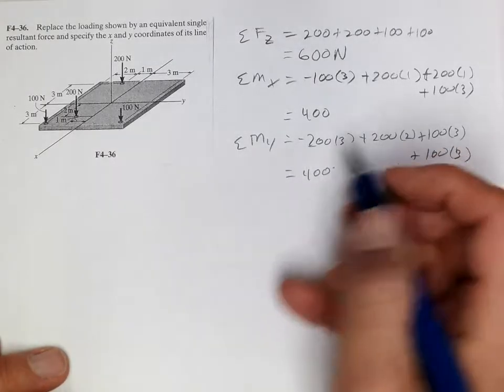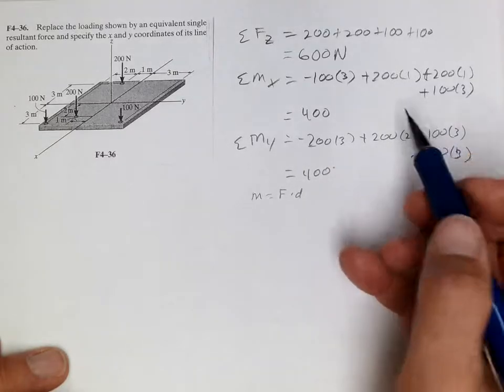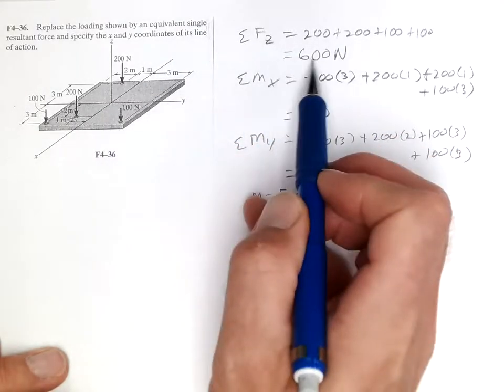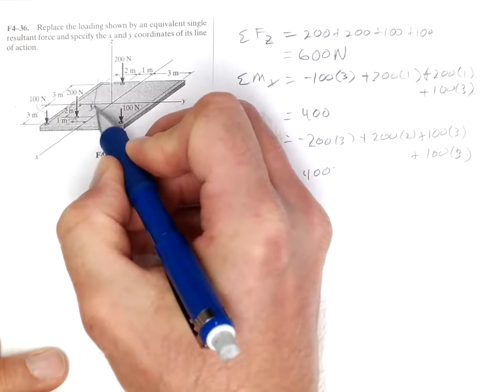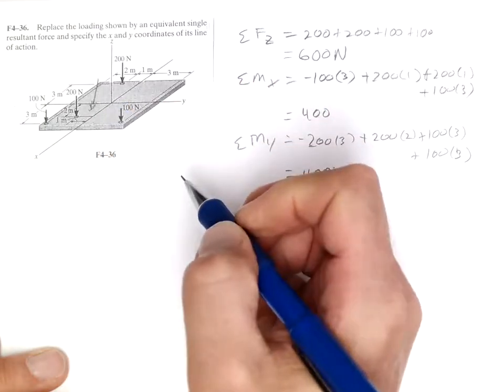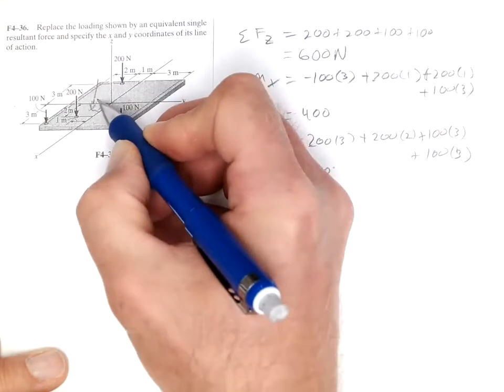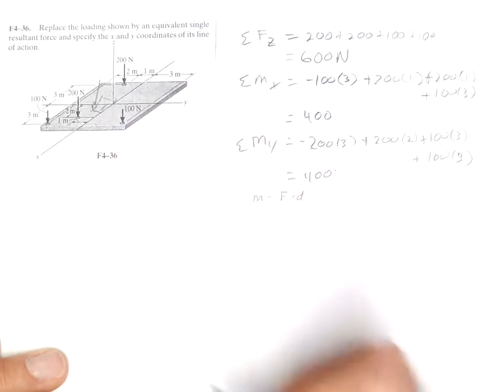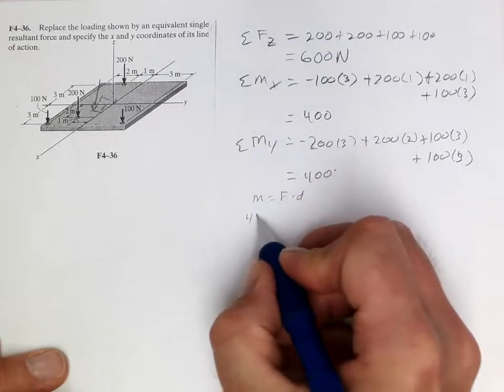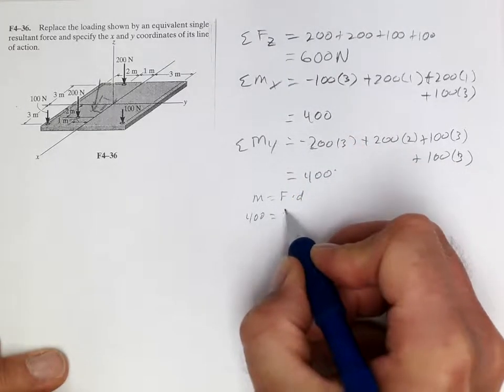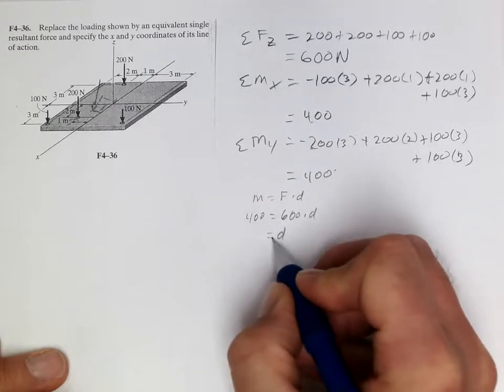Now let's find moment equals force times distance. So we're going to place this 600 newtons somewhere, you know, about here, so we need to find the x-direction distance here, and the y-distance here. And so the moment in the x is 400, and that equals the force of 600 times the distance, so the distance is 2 thirds.